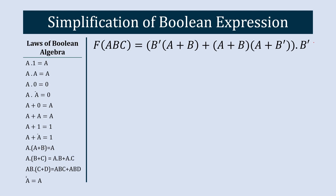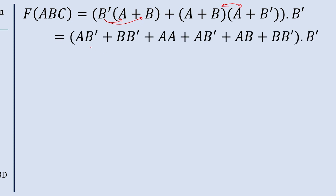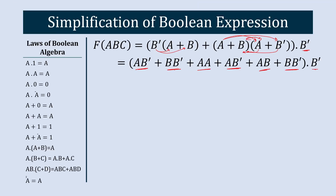Now let's jump to the next expression, where dash again represents bar. To solve this, first we multiply B dash with the two terms, then multiply those two terms together. We get AB dash plus BB dash, then A·A, A·B dash, then AB and BB dash. B dash also stays as it is.